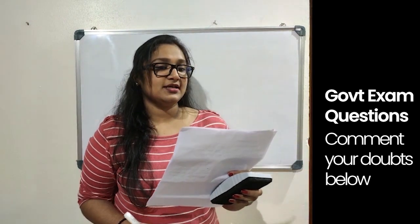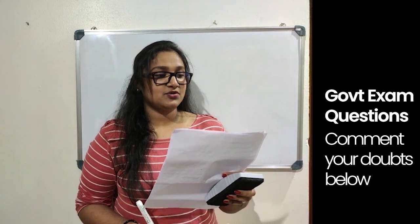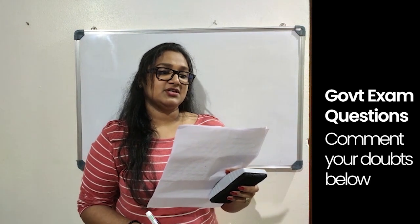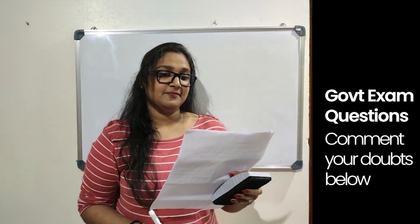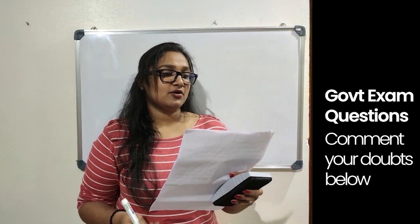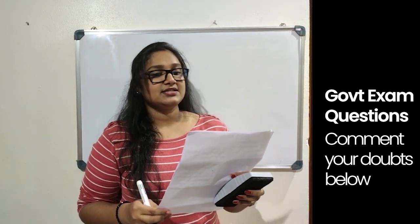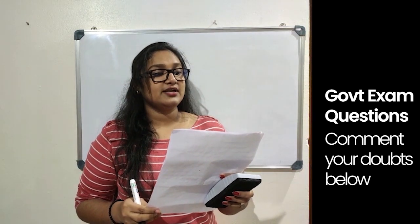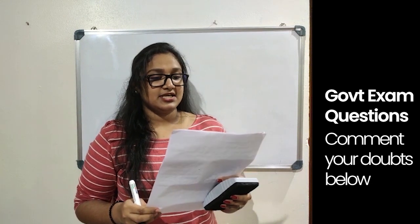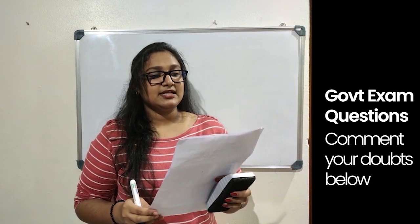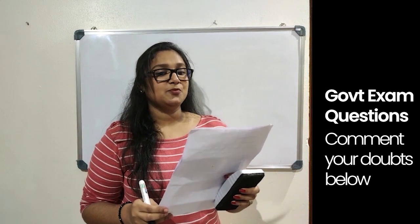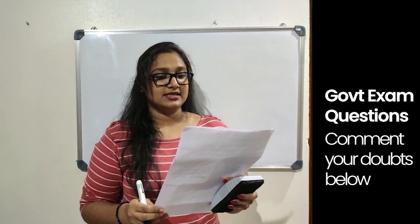A, B and C each working alone can finish a piece of work in 27, 33 and 45 days respectively. A starts by working alone for 12 days, then B takes over from A and works for 11 days. At this stage, C takes over from B and completes the remaining work. In how many days was the whole work completed?